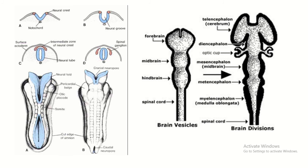The rhombencephalon is converted into two vesicles: the metencephalon and myelencephalon. The cavity of the neural tube forms the ventricles — the lateral ventricle, the third ventricle, and the fourth ventricle. The connection between the fourth ventricle and the third ventricle is the cerebral aqueduct.